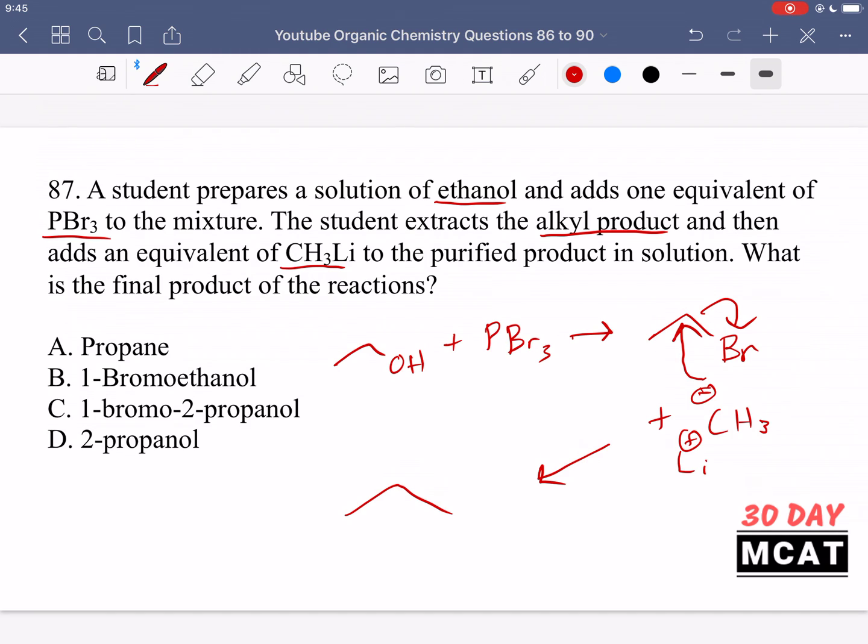So we have three carbons, just a straight three carbon chain. Our answer is propane. It's none of the other ones because we don't have the bromo remaining and we don't have the OH group remaining. That's what the other options are giving us. But you should know that PBr3 gets rid of that OH group immediately.